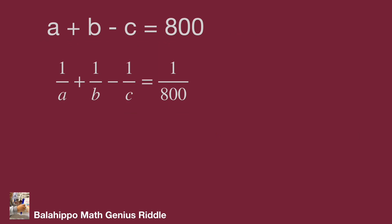We have two equations: a plus b minus c equal to 800, and 1 over a plus 1 over b minus 1 over c equal to 1 over 800. We may go for several approaches to find the result, but I notice the numbers 800 and 1 over 800 — if we multiply them, we get 1. This should be one of the approaches for this problem.